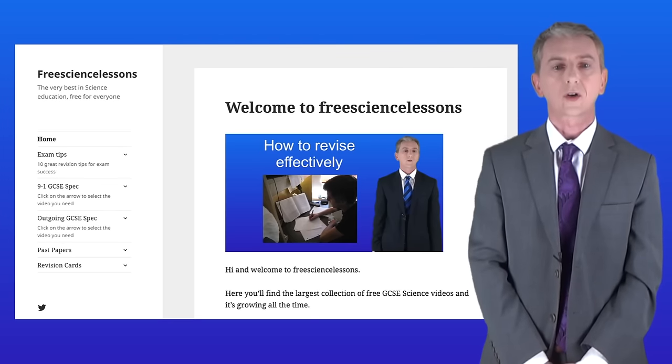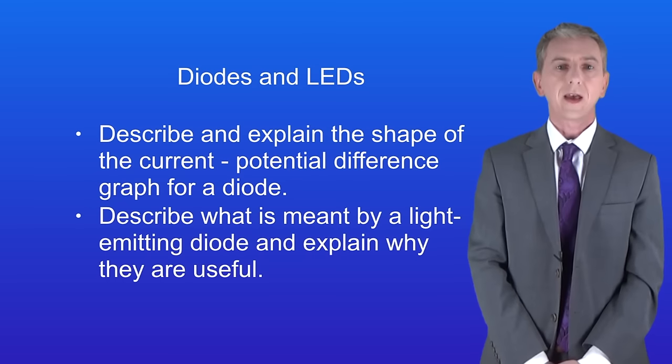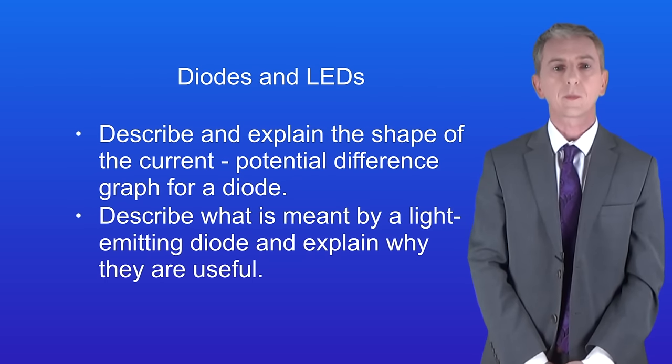Hi and welcome back to freesciencelessons.co.uk. By the end of this video you should be able to describe and explain the shape of the current potential difference graph for a diode. You should then be able to describe what's meant by a light emitting diode and explain why they're useful.